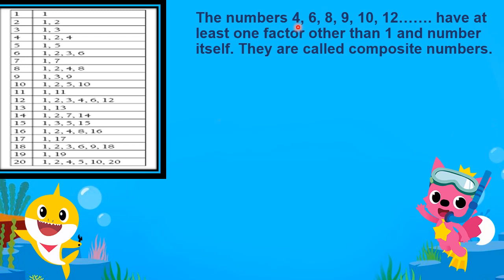Now, the numbers 4, 6, 8, 9, 10, 12 have at least one factor other than 1 and the number itself. They are called composite numbers. For example, 4 has factors 1, 4, and also 2. And 6 has factors 1, 6, and also 2 and 3. So composite numbers include 4, 6, 8, 9, 10, 12, 14, 15, 16, 18, and 20 — and this goes on.